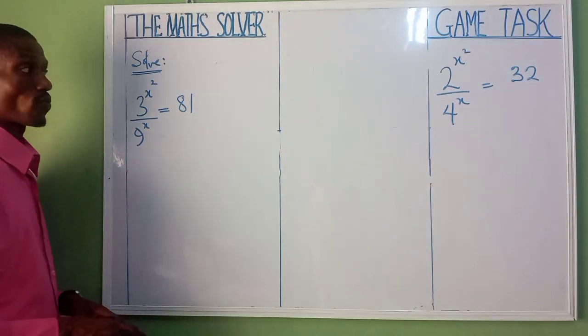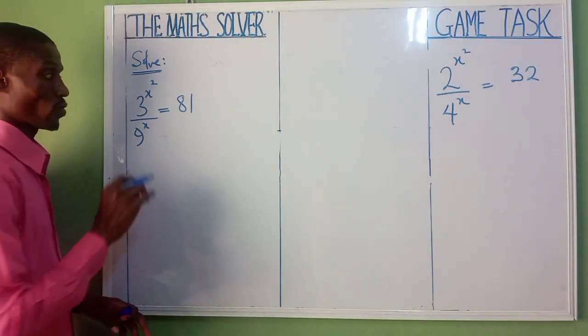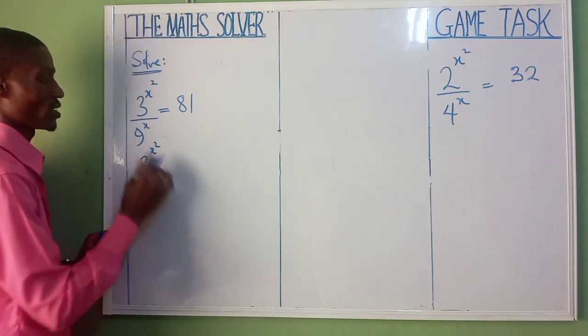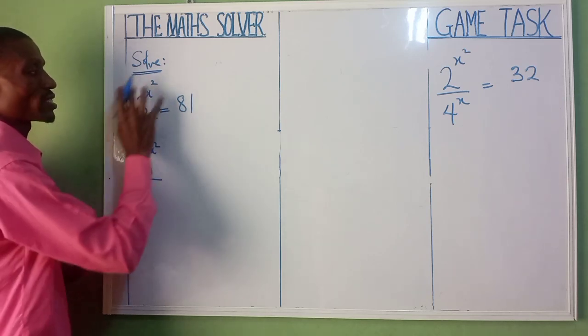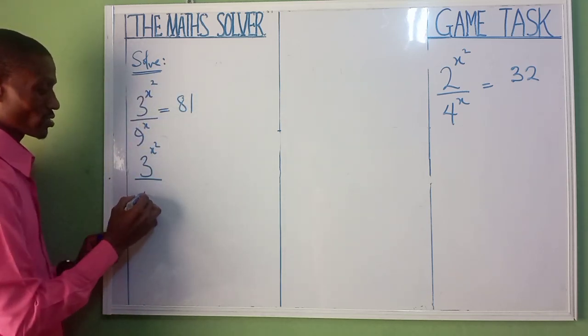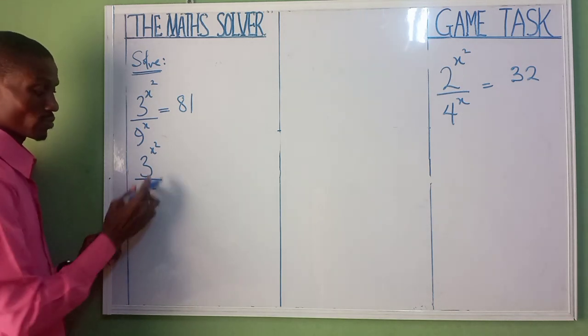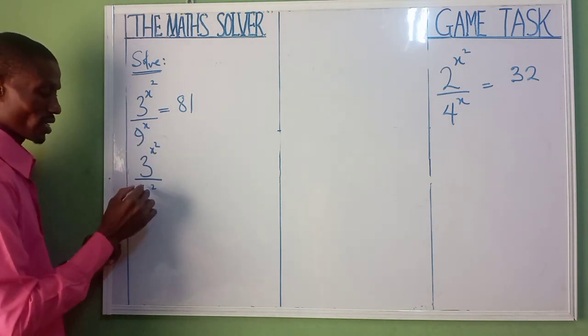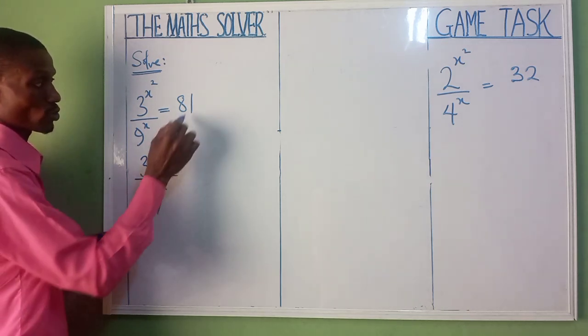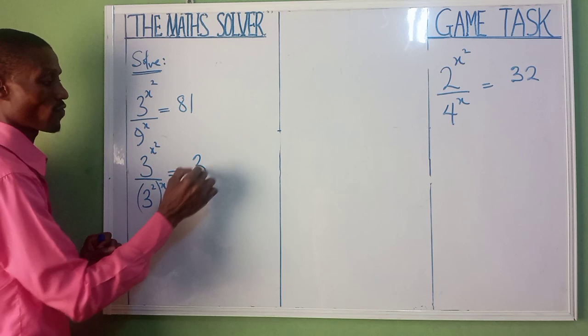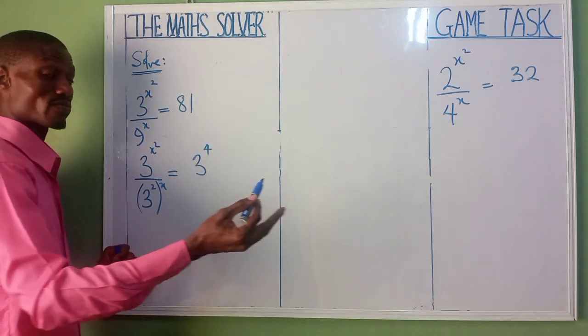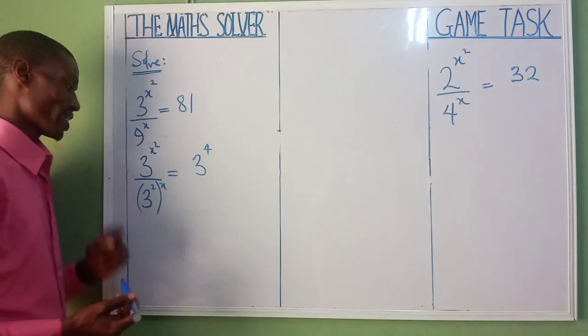Let's apply the law of indices before we are going to solve this. Here first, we have 3 raised power of x squared over... We are going to make use of 3 because it's 3 that is common. 9 is 3 raised power of 2. That's why we are using this 3. But don't forget your x is already outside here. You write your x outside. Here we are also going to use 3. 3 raised power of 4 will give us 81. 3 times 3 is 9, 9 times 3 is 27, 27 times 3 is 81.